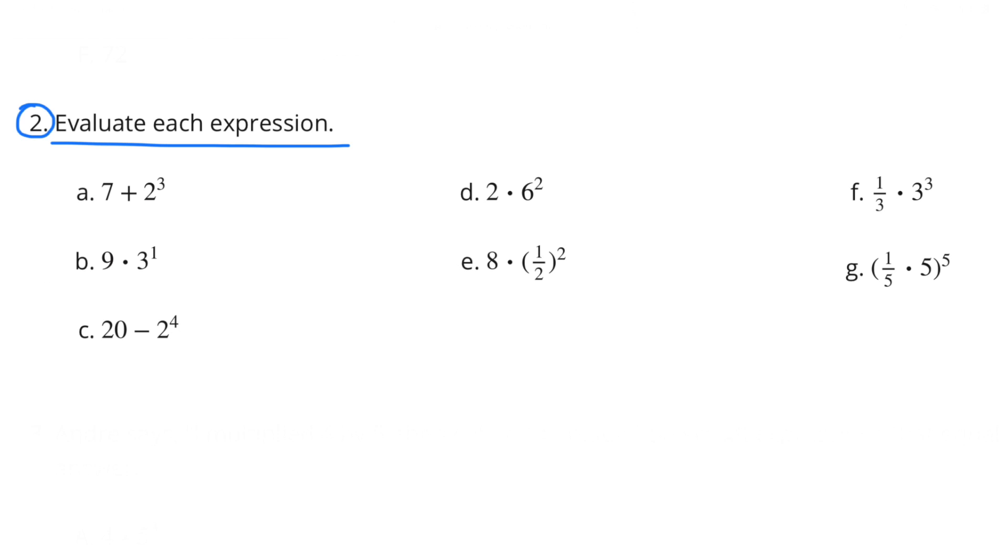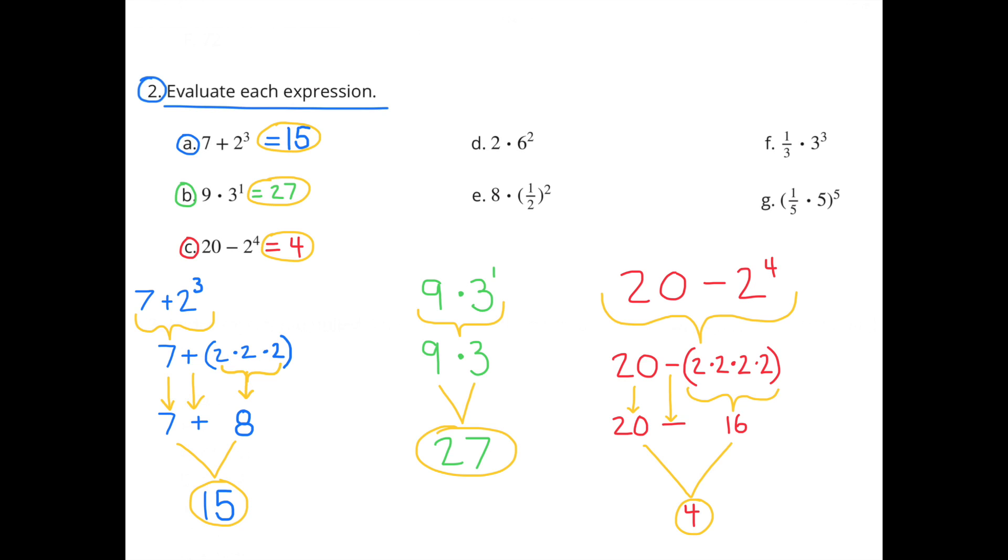Number 2. Evaluate each expression. A, 7 plus 2 to the third power. 7 plus 2 to the third power can be broken down as 7 plus 2 times 2 times 2. And 2 times 2 times 2 is 8. So we get 7 plus 8, and that equals 15.